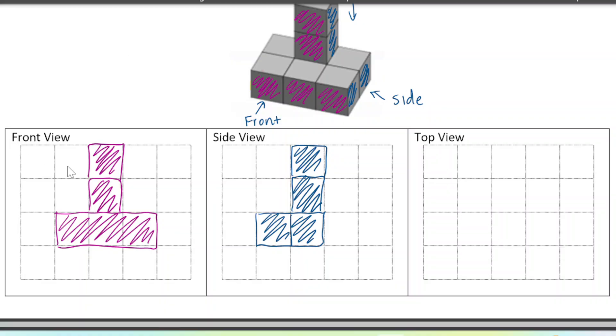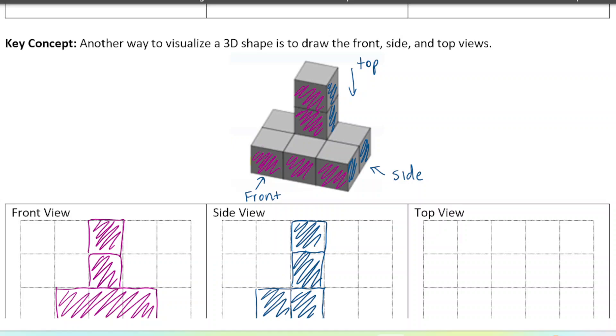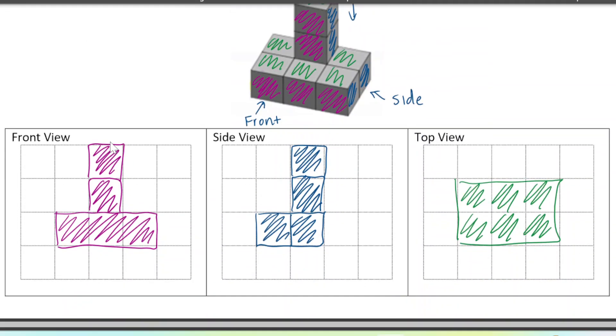Okay. And then from top down, we would just simply see, oops, we wouldn't see any depth again. So I wouldn't see that this square is like higher than the other squares. I would just see a rectangle with six squares. One, two, three, four, five, six. So that's another way to visualize 3D shapes, especially when they have different depths to them and they're not like a traditional prism or pyramid.